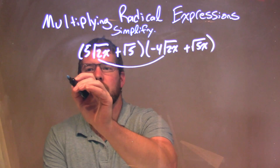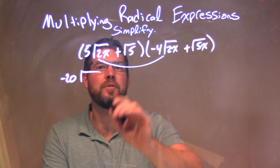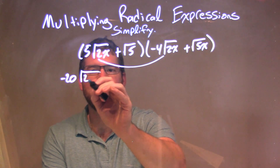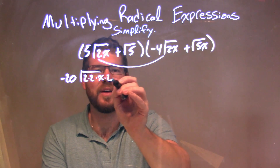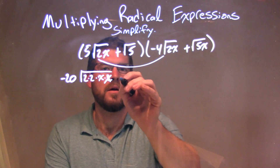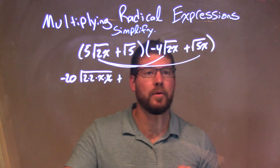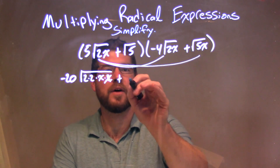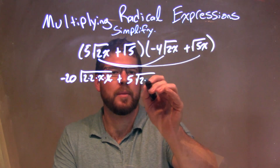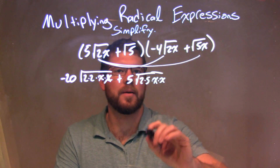5 times the square root of 2x times minus 4 gives us minus 20, and we can combine this into one big square root of 2 times 2 times x times x. Then 5 square root of 2x times the square root of 5x — the 5 stays on the outside — and we get the square root of 2 times 5 times x times x.